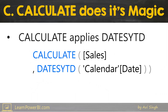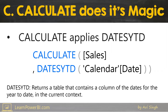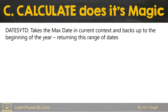Here CALCULATE is using the DATESYTD function. This is the official definition of DATESYTD — I'm going to ignore that and make my own definition: DATESYTD takes the maximum date in the current context and backs up to the beginning of the year, returning this range of dates.